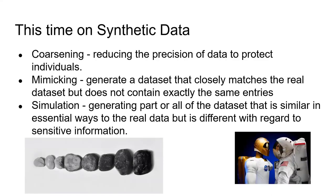In this webinar, we're going to cover the following methods. Coarsening refers to reducing the precision of data to protect an individual. An example might be reducing somebody's birth date to just their current age, or maybe an age range, for example 20 to 29. The more we coarsen, the less correct or precise our analysis will become. Next, we have mimicking, which is generating a data set that closely matches the real data set without containing the same entries. This could be sampling from a data set and adding some noise.